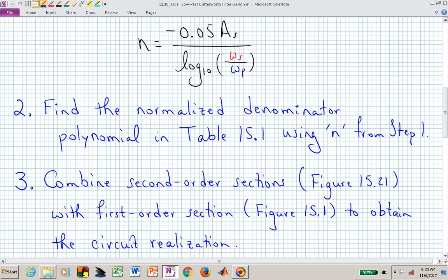Step 3: you need to figure out how big is my filter going to be. N equal to 3 says that we need one second order section and one first order section. We know what those look like in realizations of these op amp circuits. The second order sections are built from figure 15.21 and the first order section is just figure 15.1. If we had a fifth order filter, then we would need two second order sections and one first order section.